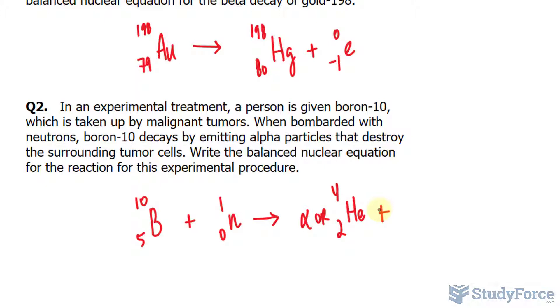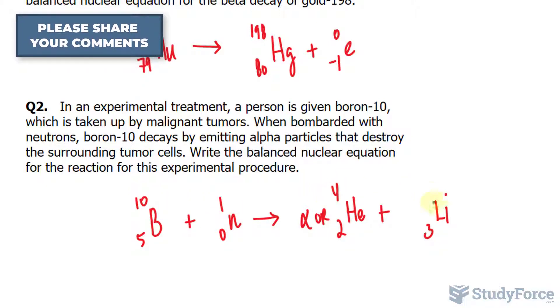now we need to find out the unknown element. We can do the math, we have 5 and 0, add that up as 5. 2 plus something has to be 5, and that's 3, and that's lithium. Adding up 10 plus 1, it's 11. 4 plus what number gives you 11? It has to be 7.